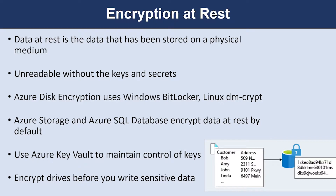Now let us look into Encryption at Rest. Data at Rest is the data that has been stored on a physical medium. This could be data stored on the disk of a server, data stored in a database, or data stored in a storage account. Regardless of the storage mechanism, encryption of data at rest ensures that the stored data is unreadable without the keys and secrets needed to decrypt it.